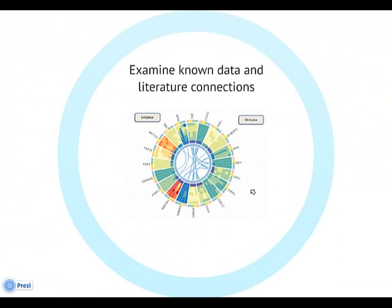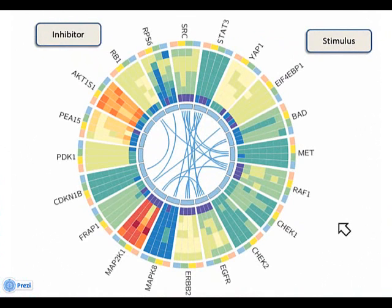The blue lines connecting the proteins represent known connections or functionalities. By clicking one of these, BioWheel will show you what is already known about this link and connect you to popular databases.